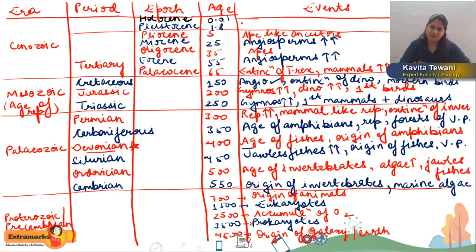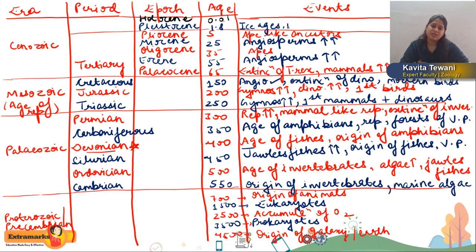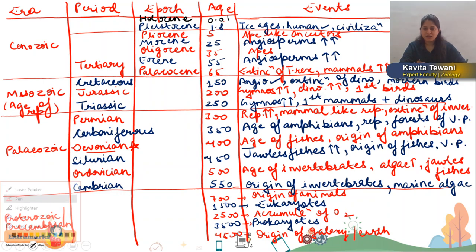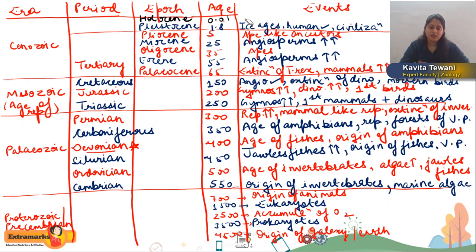In the Pleistocene and Holocene, ice ages were seen, humans appeared, and human civilization was also seen. In Holocene, the historic time humans — like Akbar, Babur, Humayun — they represent historic time humans. Cenozoic era is considered the Age of Mammals.